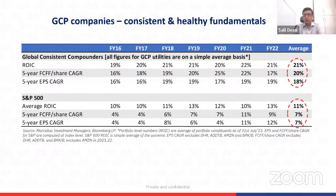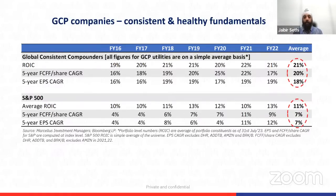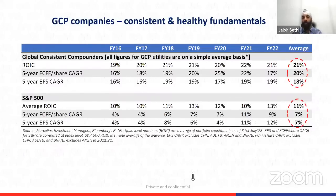Between buybacks and dividends, as investors should we be indifferent, or is there more value from one versus the other? It's a function of taxation in that particular market. In the US, buybacks are more tax-efficient than dividends — that's why the market tends toward buybacks. In India, there are a lot of restrictions around buybacks, so companies do more dividends. But fundamentally, as long as you're reinvesting the dividends, it comes to the same thing. Whichever is the most tax-efficient route in a given market is the right one.